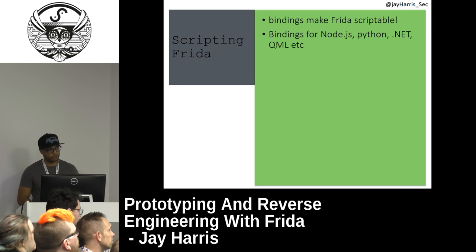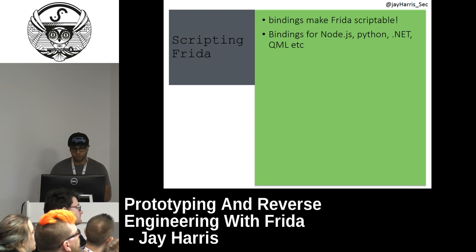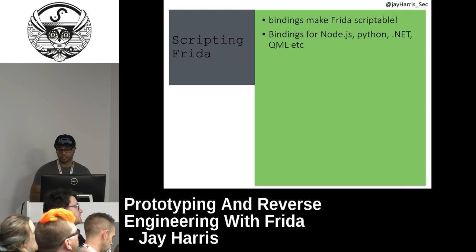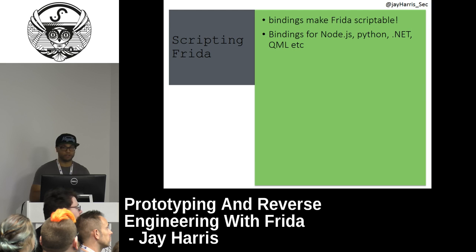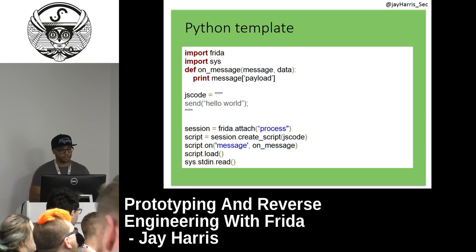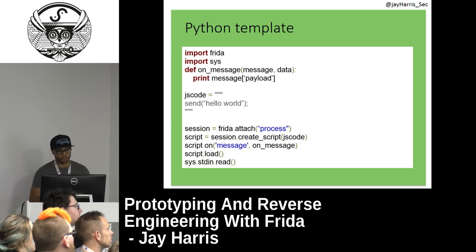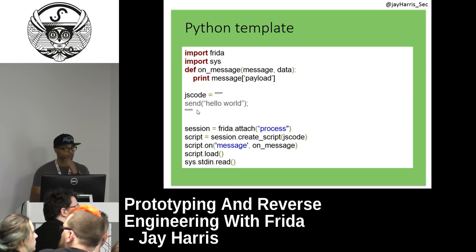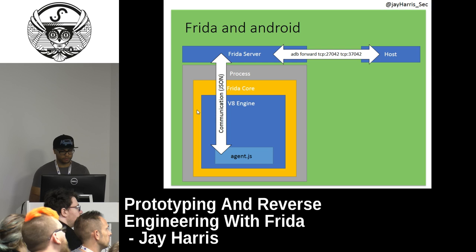Frida is scriptable as well, which is awesome. It has bindings for Node, Python, .NET, and QML and some other things. I like to use Python a lot — I use the Python binding so I can write my code in Python to start to control Frida and inject JavaScript into it. This is the template I tend to use: attach to a specific process, load this script — which can either be hard-coded in or just have the JavaScript file on disk. We'll look at this again in a little while.